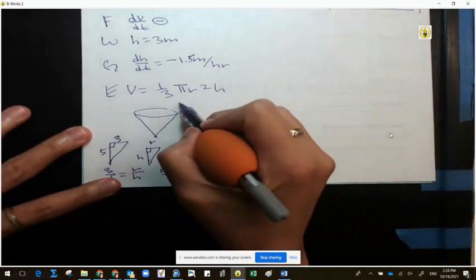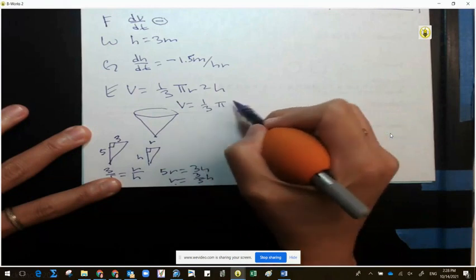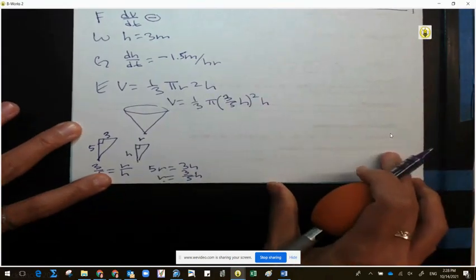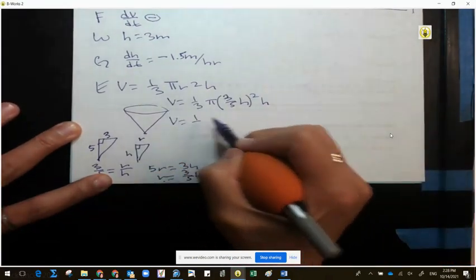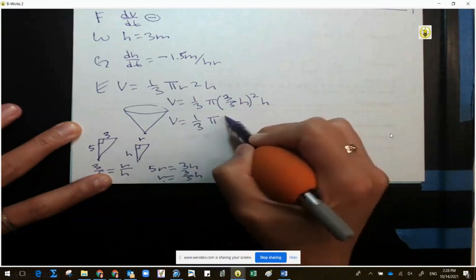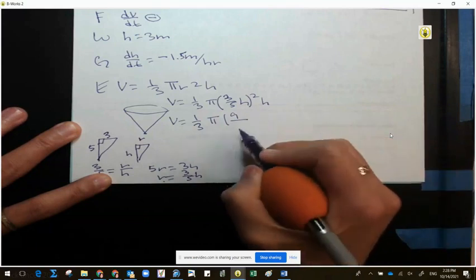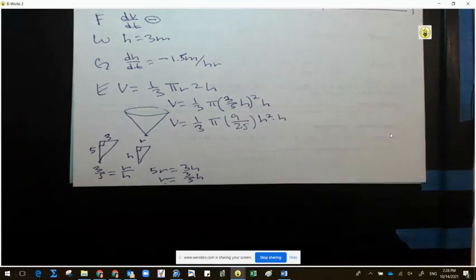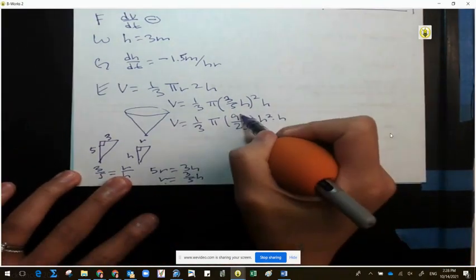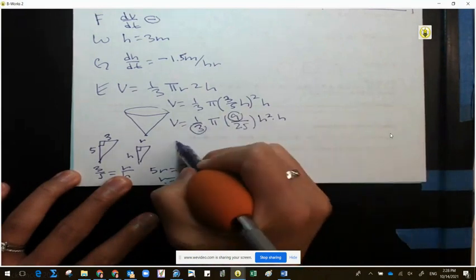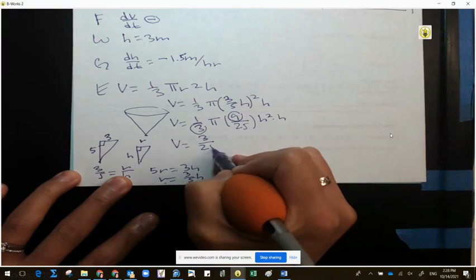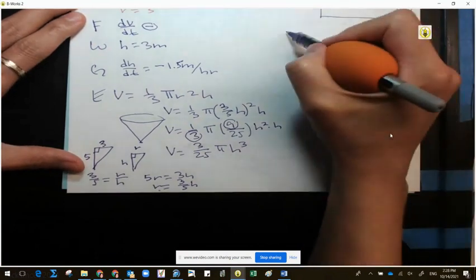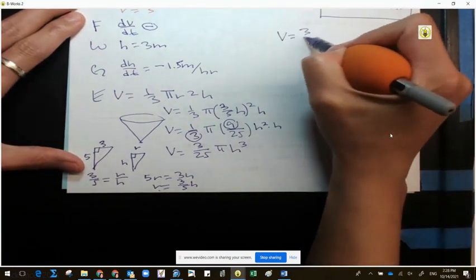Let's plug it into the formula that we had. Our volume was one third pi, the radius is three fifths h squared, h squared h. Let's do our mental math. What is 3 squared? 9. What is 5 squared? 25. And then we're going to have h squared times h. We'll simplify that in the end. We have 9 and 3, when I divide them, what do I get? 3. The 25 I'm not messing with, pi h cubed.